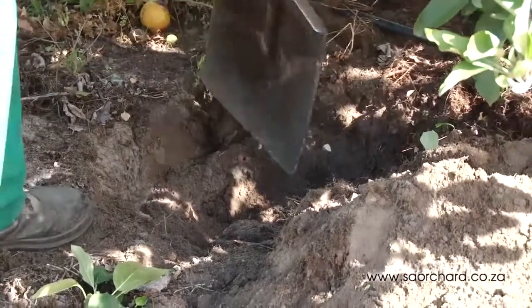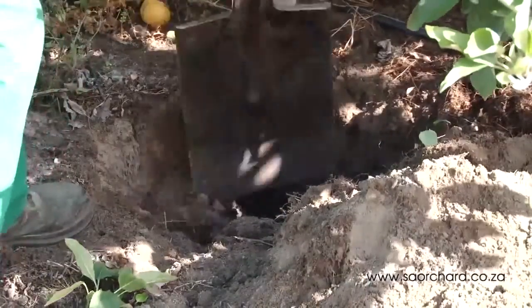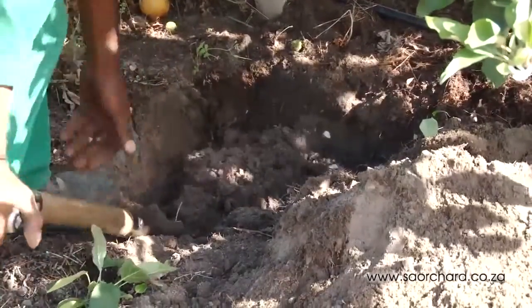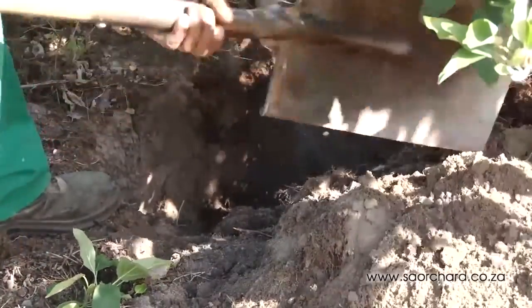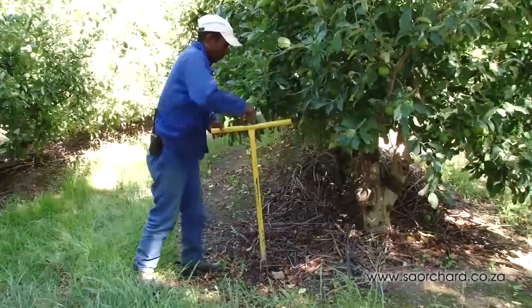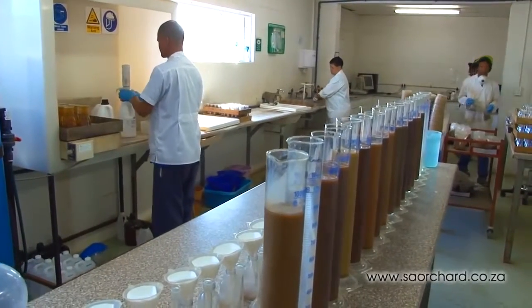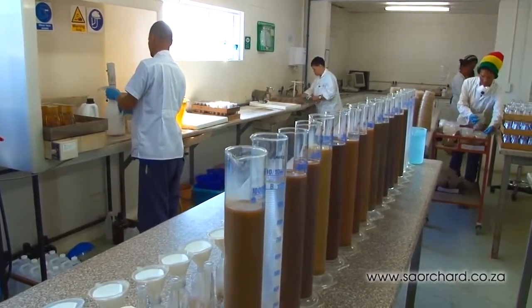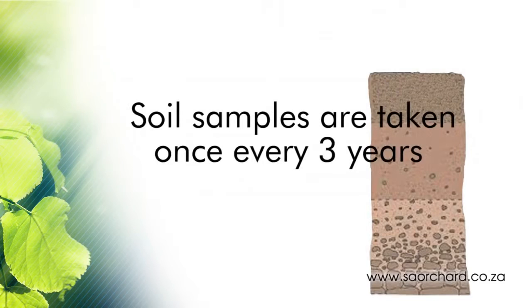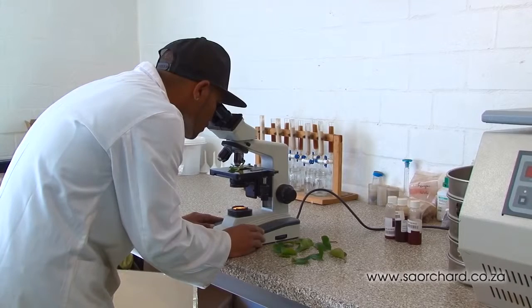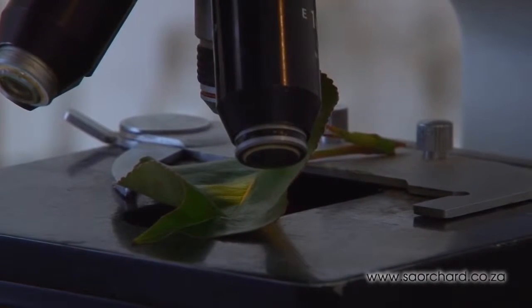To determine the amount of macro and micro elements in the soil, we need to take a soil sample at a depth of 30 centimeters. This can be done by digging with a spade or burrowing down with an auger. Once we have the soil sample, we'll send it to a laboratory for analysis. Soil samples are analyzed once every three years. Leaf samples are taken in January each year and tested in a lab to determine the amount of each element present in the tree.